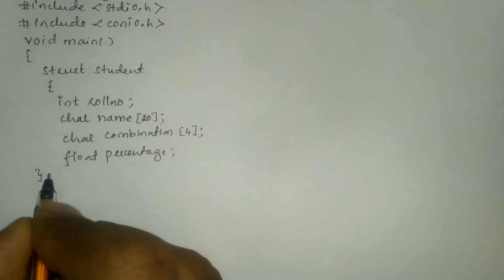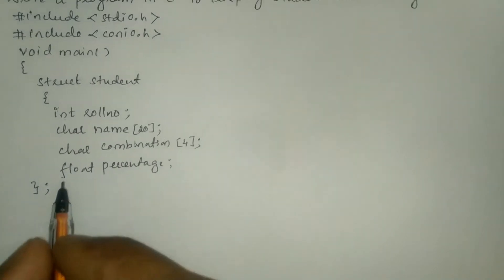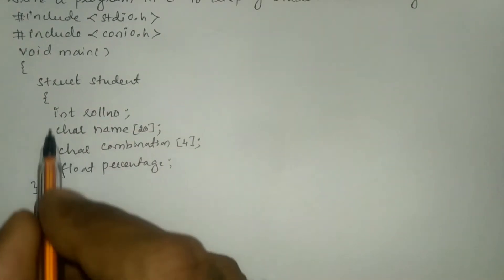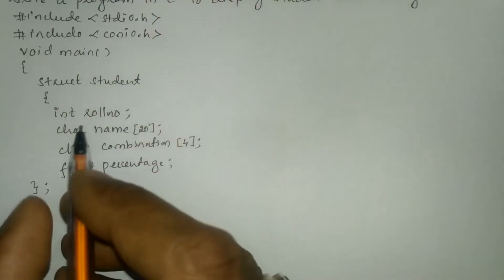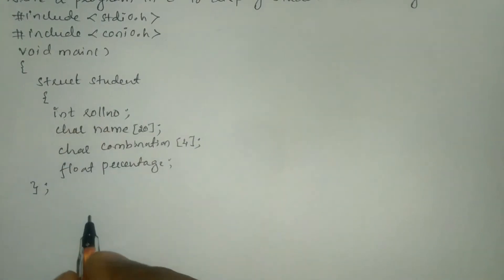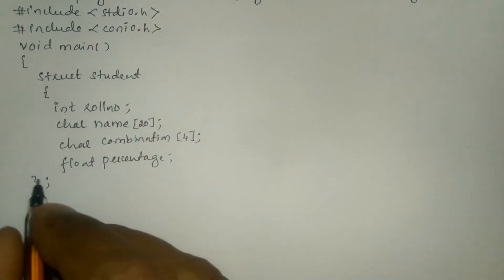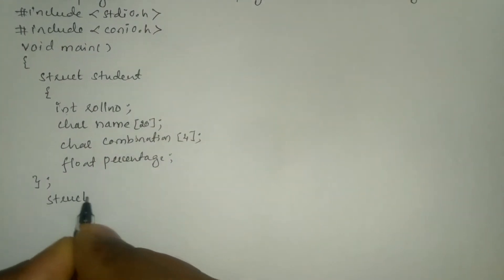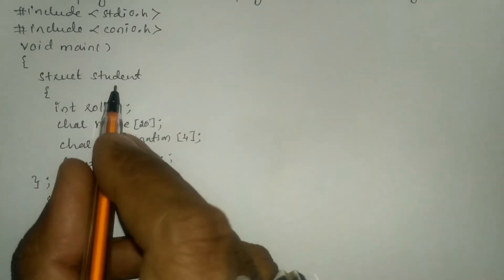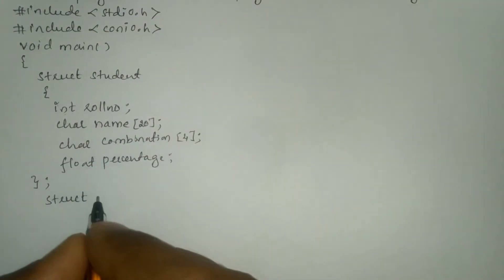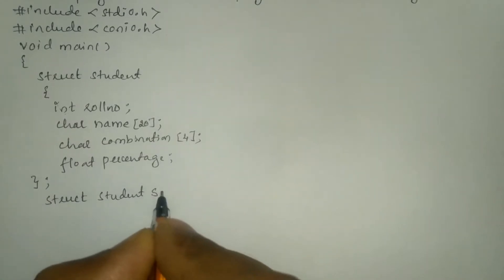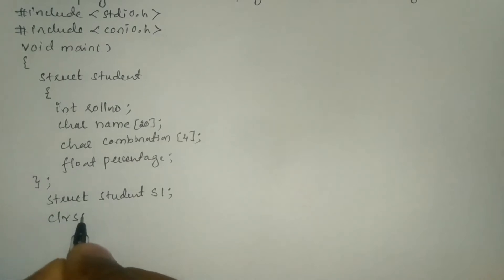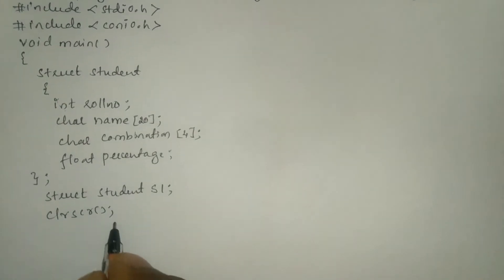Curly closing brace and semicolon indicates the termination point of the structure definition. Now let us create an object of this particular structure. We have to write the keyword struct, then the name of the structure definition student, and now I'm going to write s1 as an object. I'll write the clrscr function which is used to clear the screen.